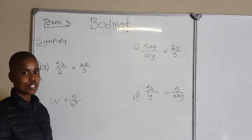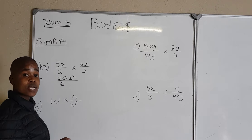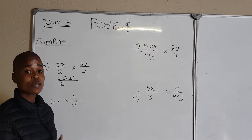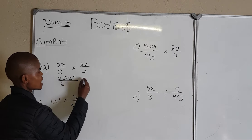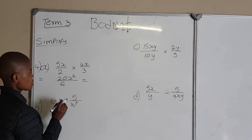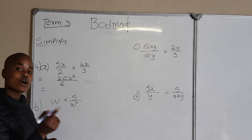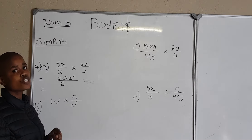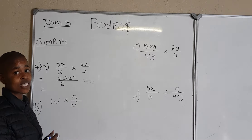5 multiplied by 4 gives us 20. x multiplied by x gives us x squared — that is my numerator. Now going to my denominator: 2 multiplied by 3 gives 6. Remember that when we are dealing with fractions, we must always simplify. We look for the highest common factor of the numerator and the denominator, and we divide it into both numerator and denominator.